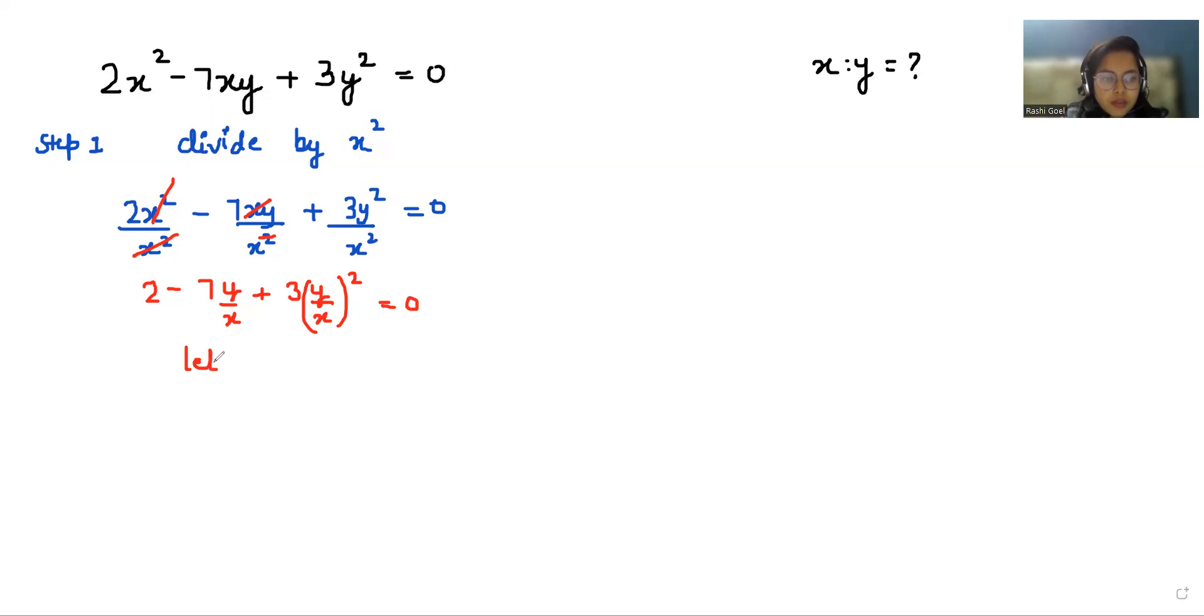Let's substitute y by x equals a. So the equation becomes 2 minus 7a plus 3a² equals 0. If we arrange it, 3a² minus 7a plus 2 equals 0. Now it looks like a quadratic equation. So we can do the middle term split method.